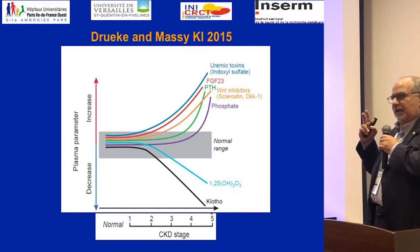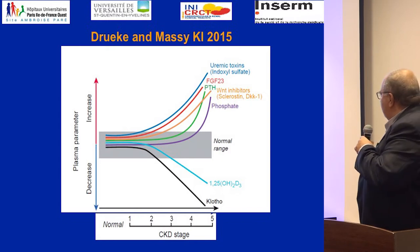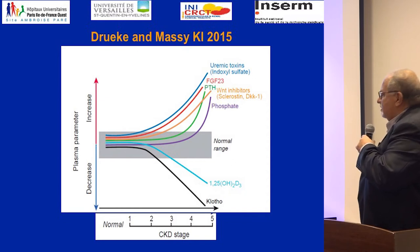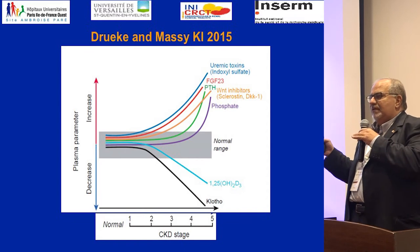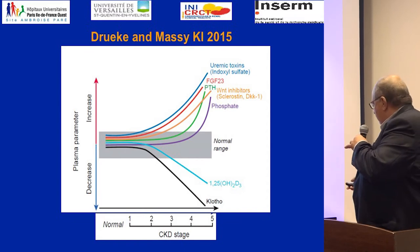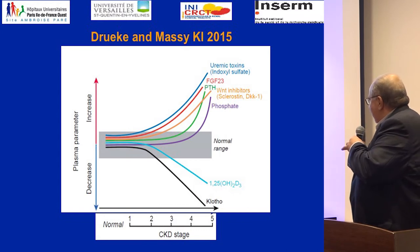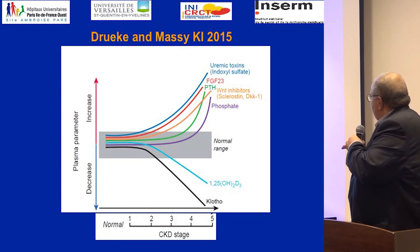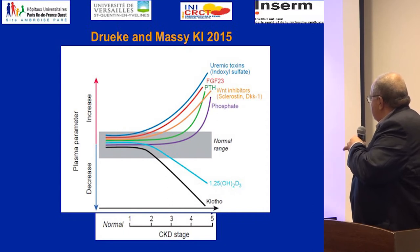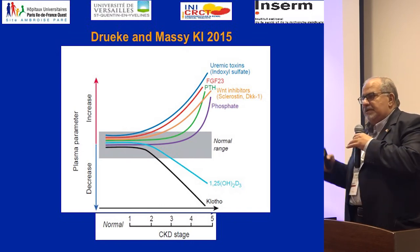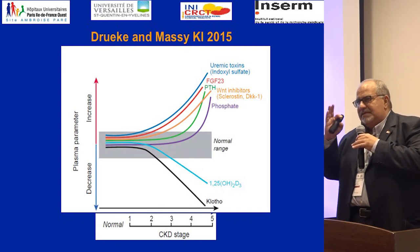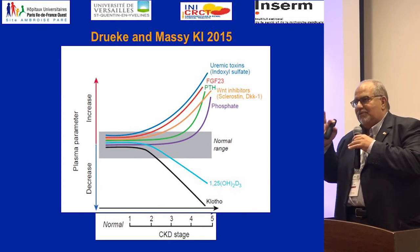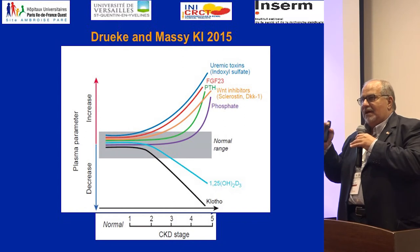Keep in mind: many of the works done in the literature are related to stage 5D, in dialysis, where everything is elevated. But if you look starting from stages 1, 2, 3, 4, 5, some uremic toxins like indoxyl sulfate, sclerostin, or FGF-23 increase earlier, whereas for example phosphate and PTH will increase only later on. So you need to define the stage to define your type of uremic toxin. Not all uremic toxins are elevated in stages 2 and 3.